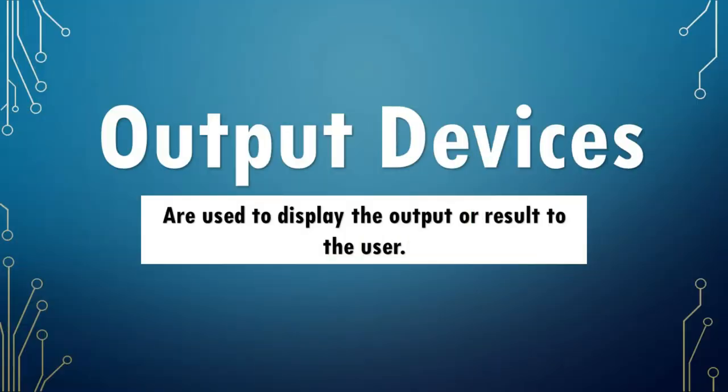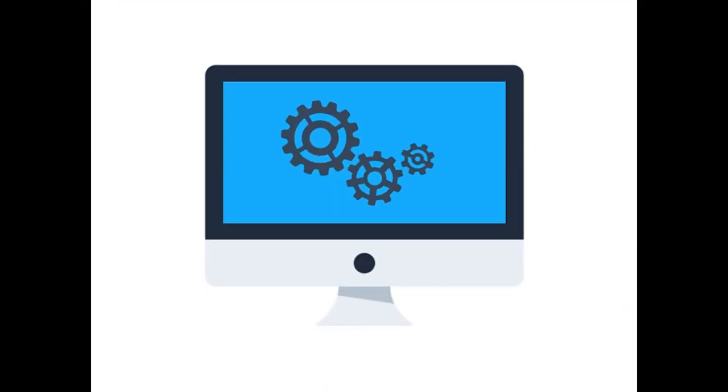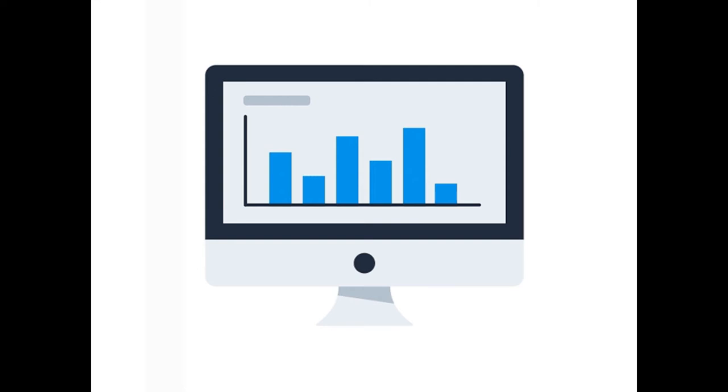Output devices are used to display the output or result to the user. These hardware components visually convey text, graphics, and video information to the user. Examples of output devices include: Monitor — used to display multimedia such as text, graphics and videos to the user, and is the most common output device we encounter daily. Printer — produces a hard copy of documents stored in a computer. Speakers — produce audio output that can be heard by the user. Projector — takes a signal output from a computer and projects an image onto a projector screen. Output devices help display information to the user.